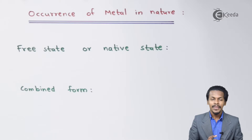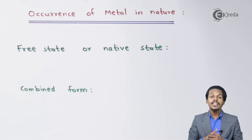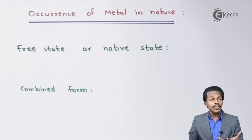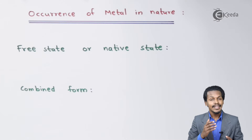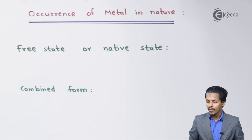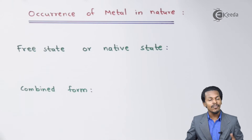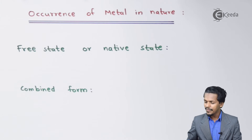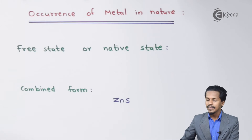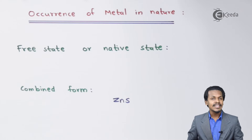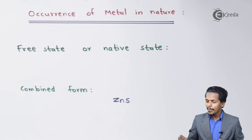Other metals are found in the combined form — as silicates, carbonates, or sulfides. For example, ZnS, which is zinc blende, is a combined form where the metal zinc is bound with sulfur.